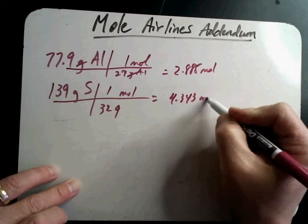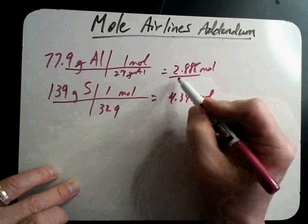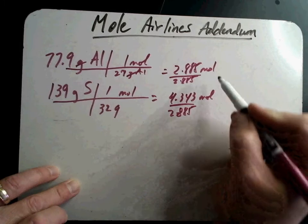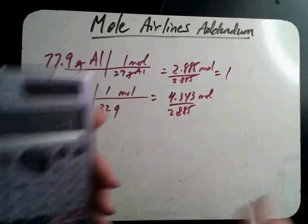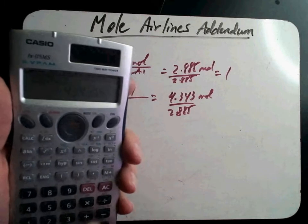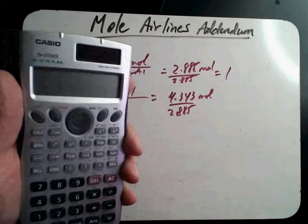So I divide by the smallest, 2.885, 2.885. So that's a 1, so there's a ratio right there. 4.343 divided by 2.885 is 1.5.